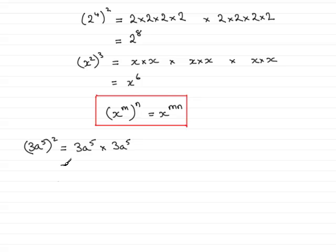And so what's this going to be? Well, we've got 3 that is repeated. It's squared. And I could have got that from here. 3 squared. 3 squared is 9. And then we have a to the power 5 which is squared. It's repeated. So that's a to the power 10. 9a to the power 10.